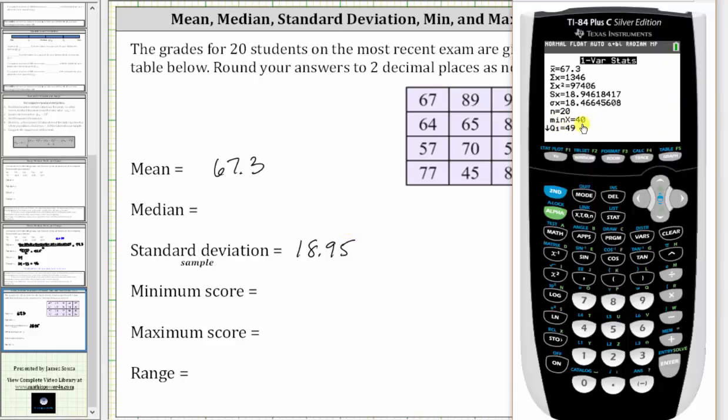Notice how minX is the minimum, so the minimum is 40, and notice the arrow next to Q1. That means there's more information below, so we press the down arrow. So the minimum is 40. The maxX is the maximum, so the min is 40, the max is 98, and the median is 66.